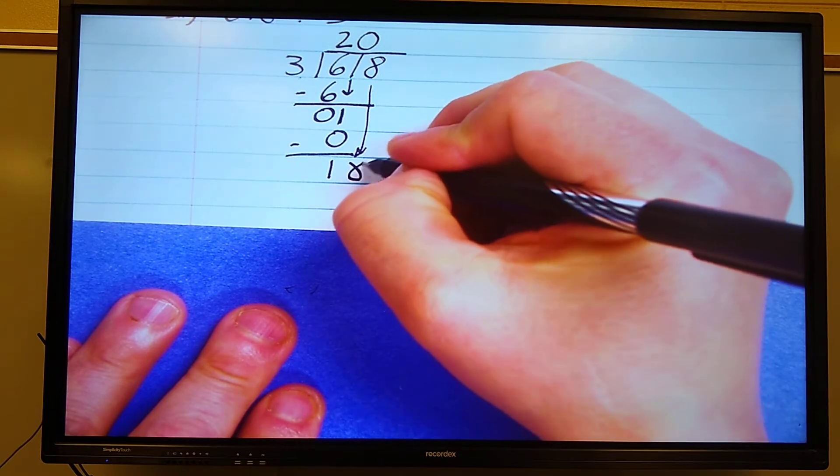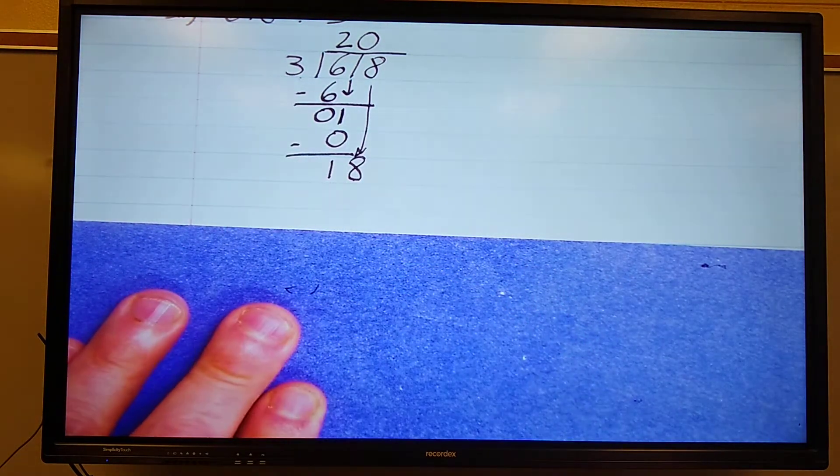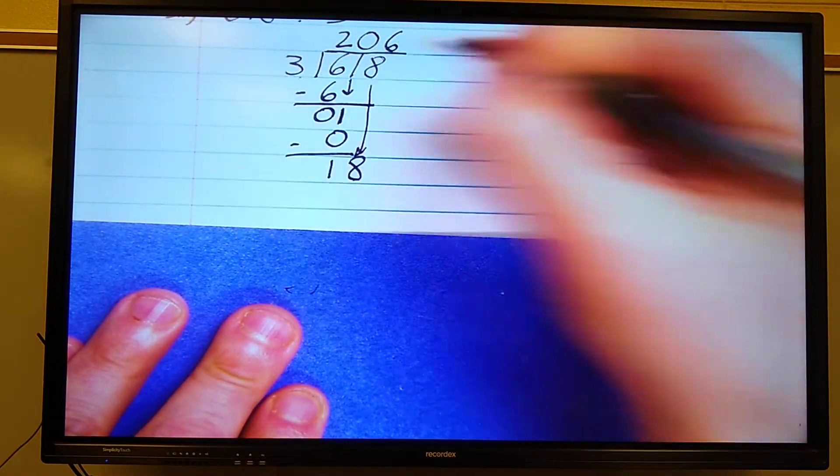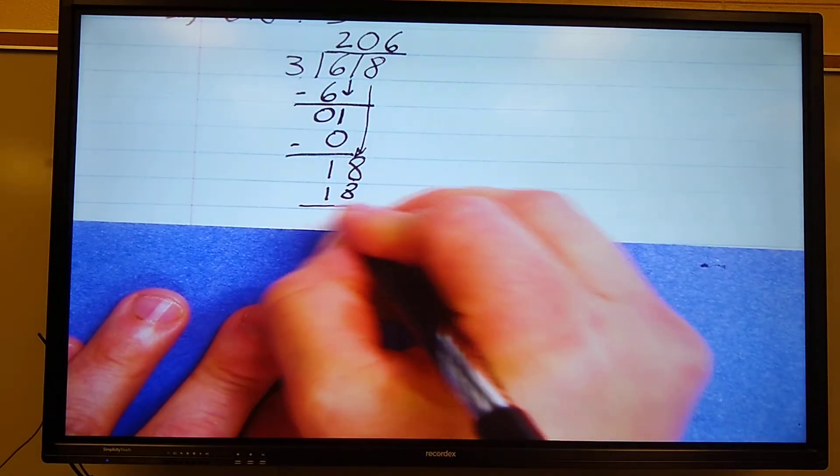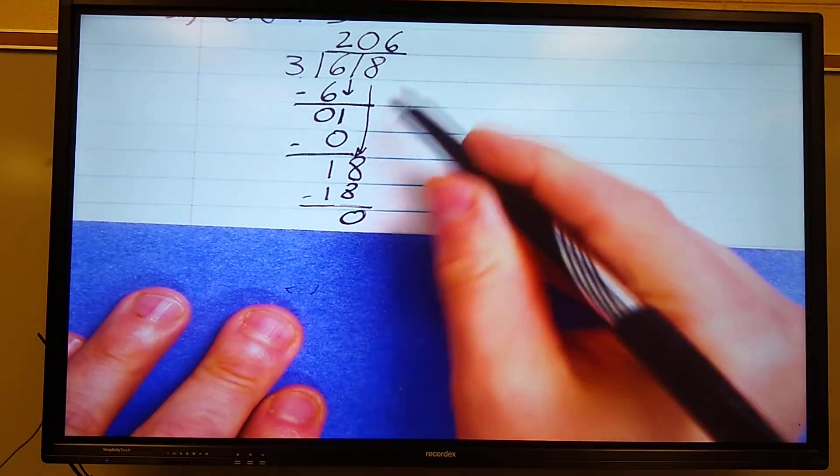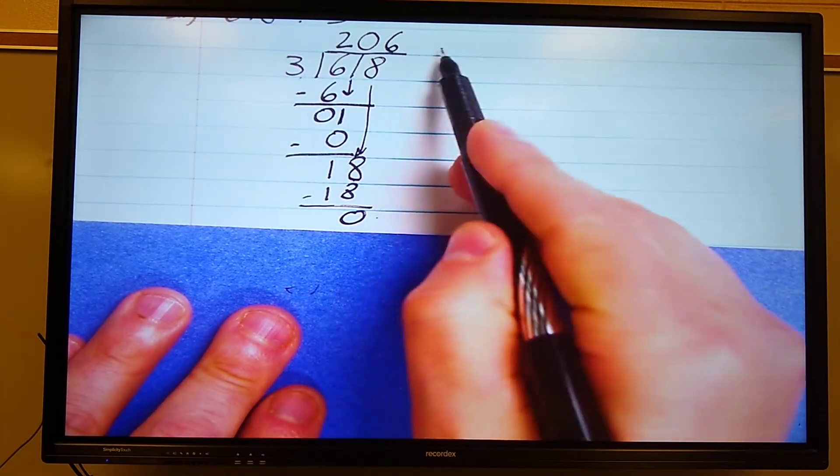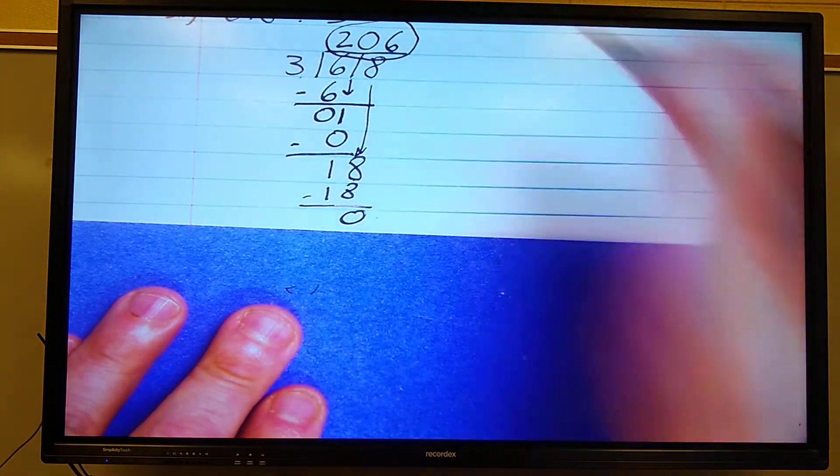Now we got to do it all over again. 3 going to 18, 6 times. 6 times 3 is 18. That's the multiply step. Now I subtract. 18 minus 18 is 0. Nothing left to bring down. 0 is a remainder. I don't have to put remainder 0. My answer is 206.